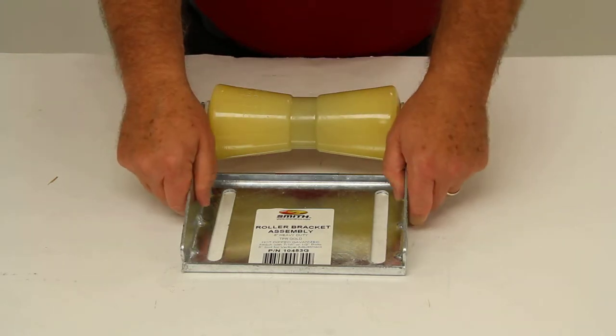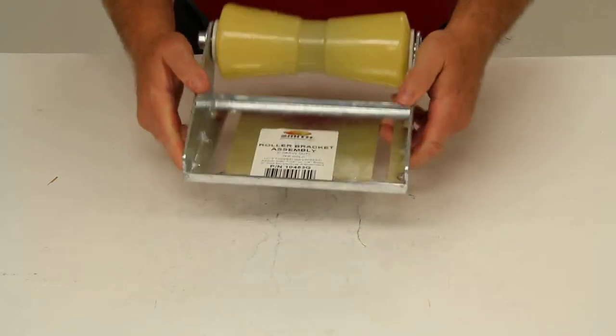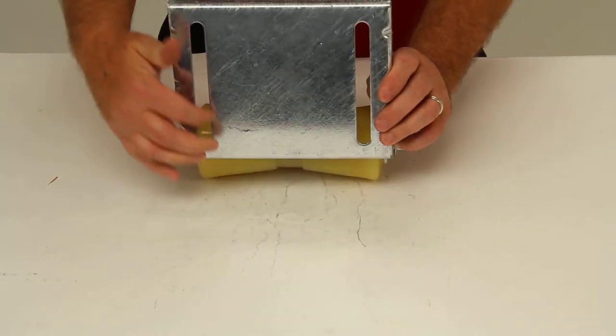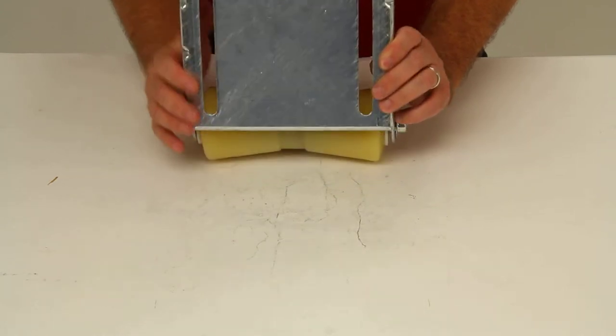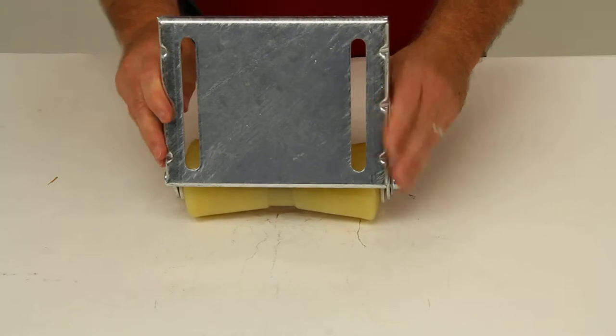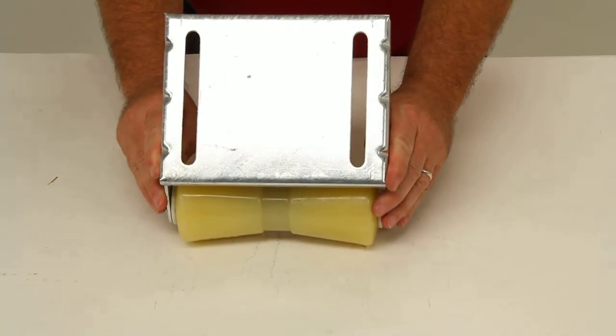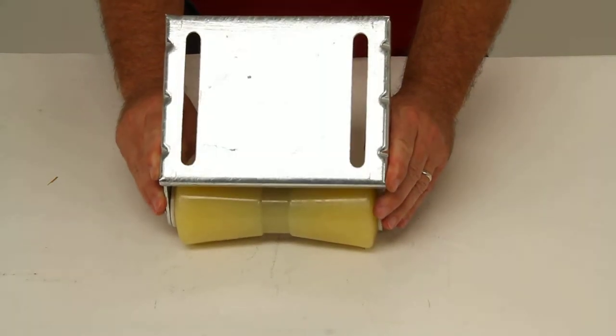The panel bracket lets you bolt your roller assembly onto the front of your boat trailer. It does have these slotted mounting holes that allow you to adjust the position during installation. And when installing it, it does require half-inch or 7/16 fasteners, which are not included.